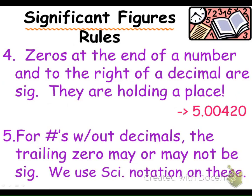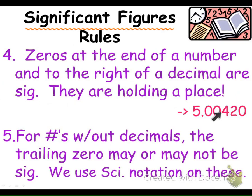The next rule is zeros at the end of a number and to the right of the decimal — to the right of the decimal is really important. Zeros at the end and to the right of the decimal are considered significant. These two zeros are significant because of the zero sandwich rule. This zero is significant because it's to the right of the decimal and at the end of a number as well. So in this case this would have six significant digits.